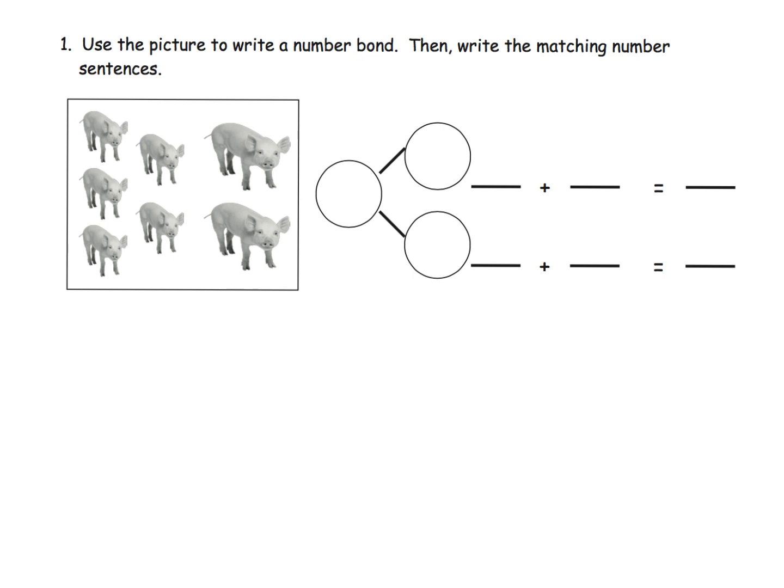And we could begin by saying there's one, two, three, four, five, six, seven. There's seven pigs. That's our total.